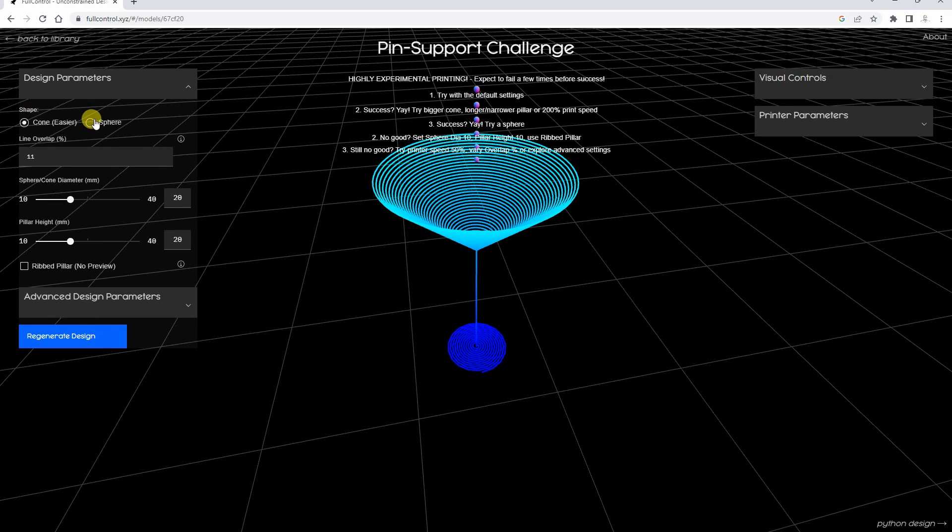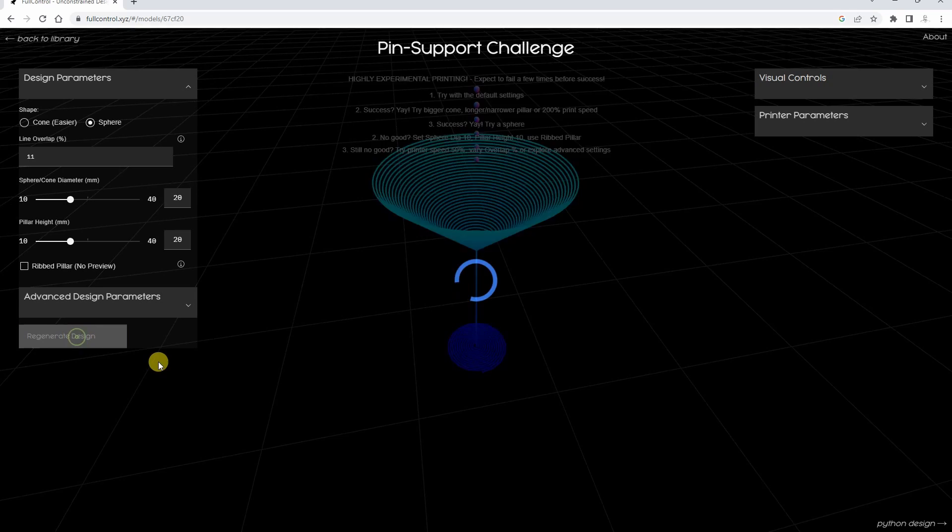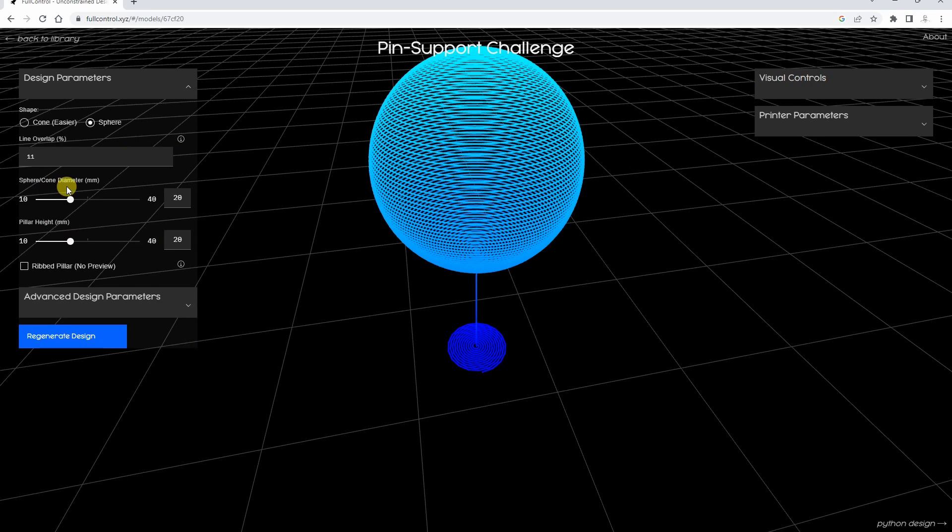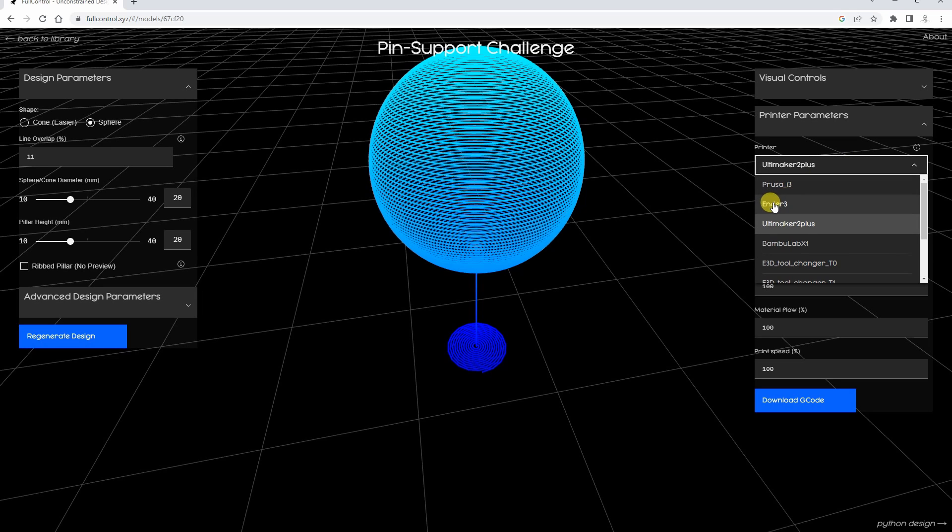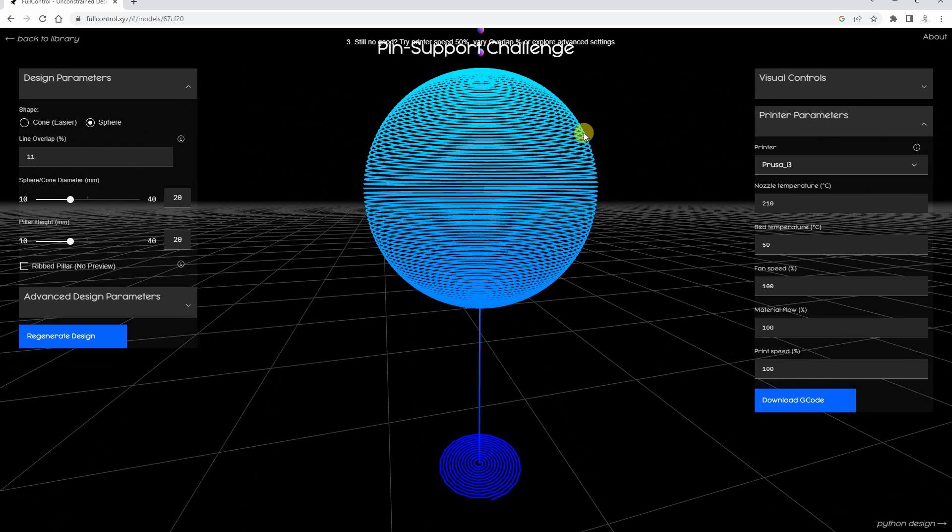There are two versions. The sphere is the hardest one and I will not change anything else here. Printer parameters, well for every printer I use this one. Only for Prusa I use this g-code. Now let's analyze the printing.